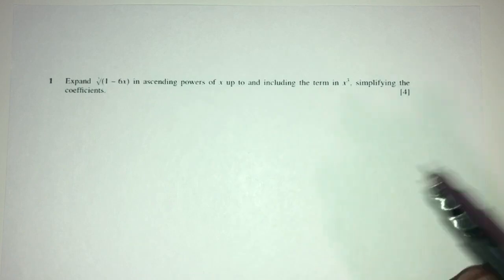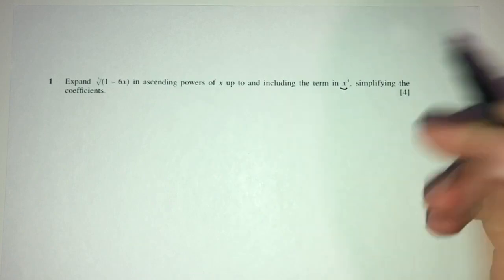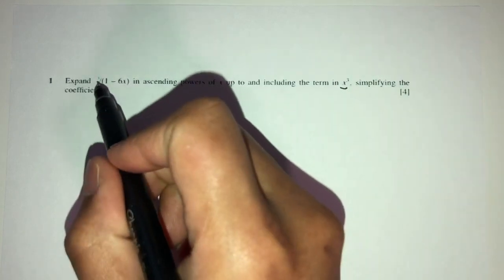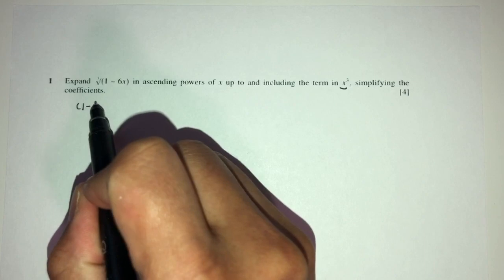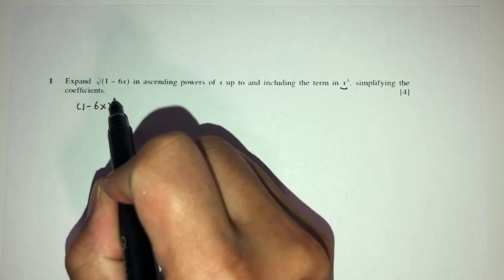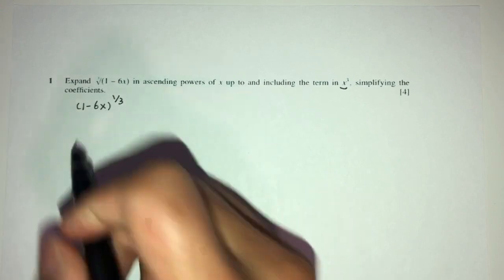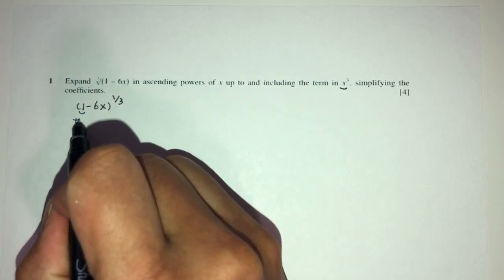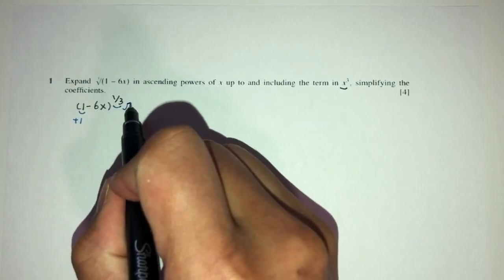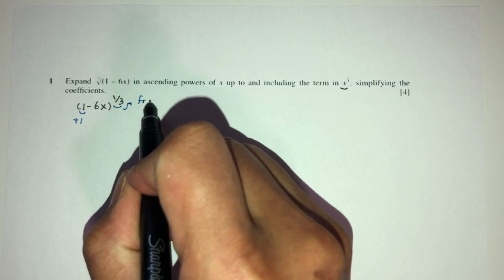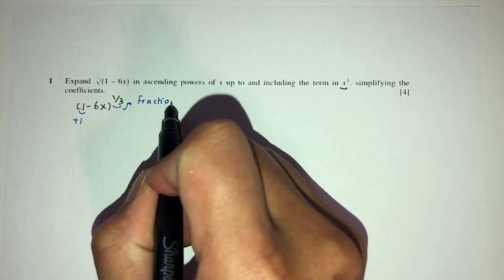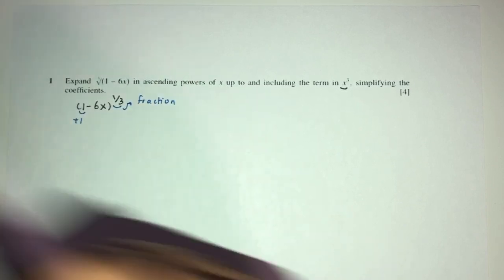So, this is question number 1. We have to expand this in ascending powers of x up to x cubed. We have 1 minus 6x to the power 1 over 3. We check — it's plus 1 and it's a fraction, so good to go. We can use our formula for binomial expansion.